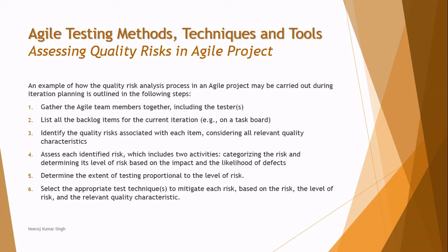Step five: determine the extent of testing proportional to the level of risk — how many test cases have you written and how much testing you are performing. You address risk areas depending on the level of risk, which is determined by impact and likelihood. Step six: select appropriate test techniques to assist your mitigation process based on the risk level, helping you overcome barriers in a more effective way.